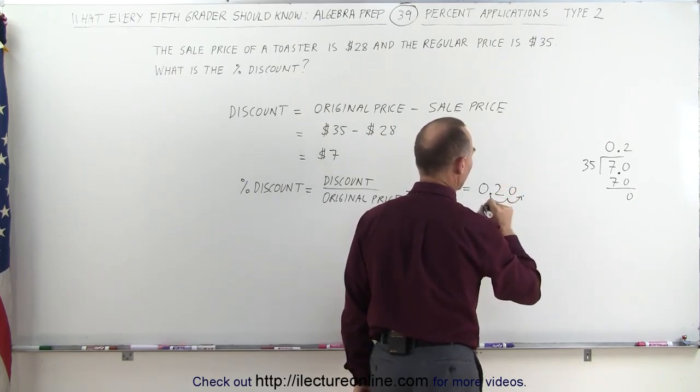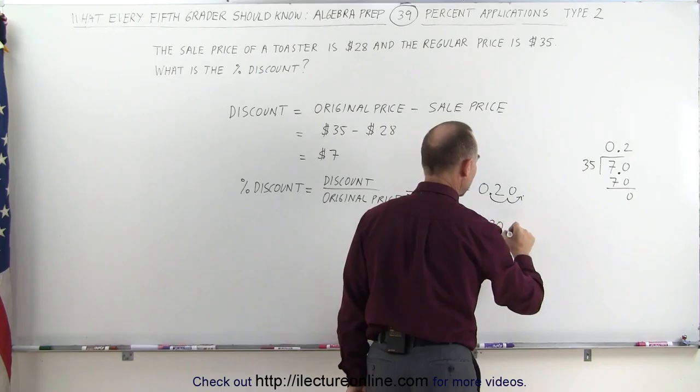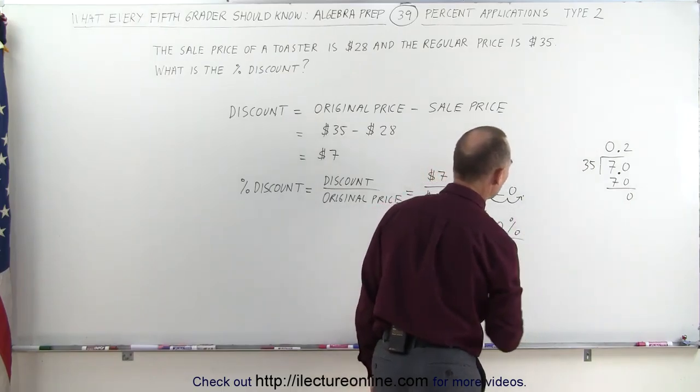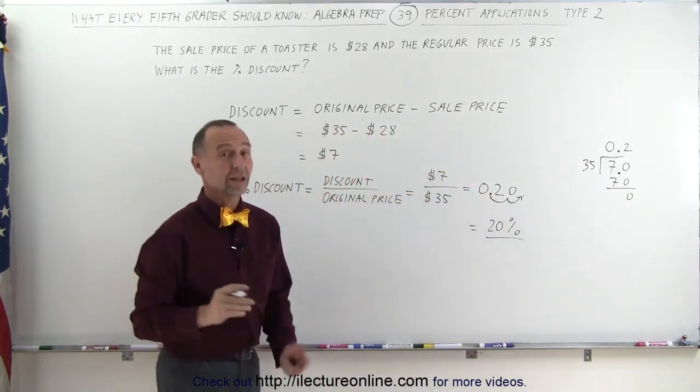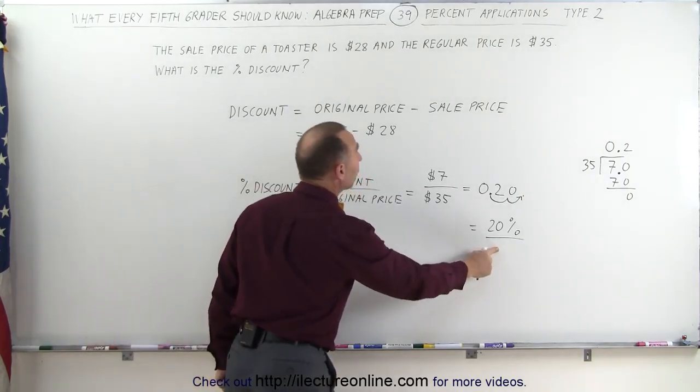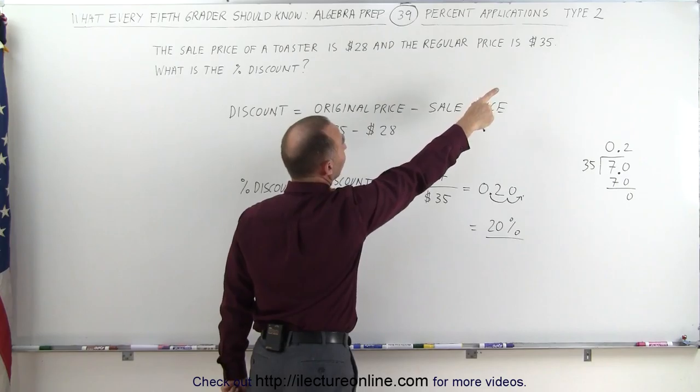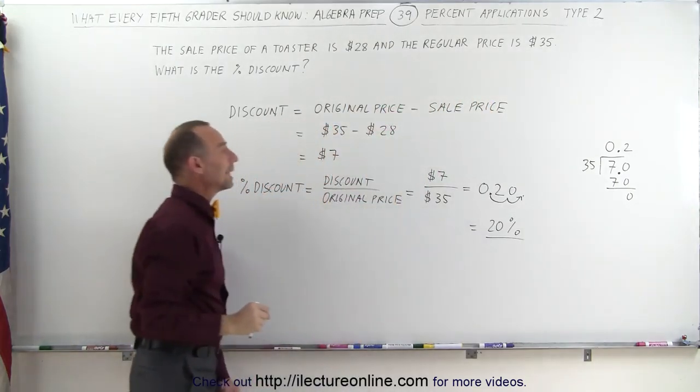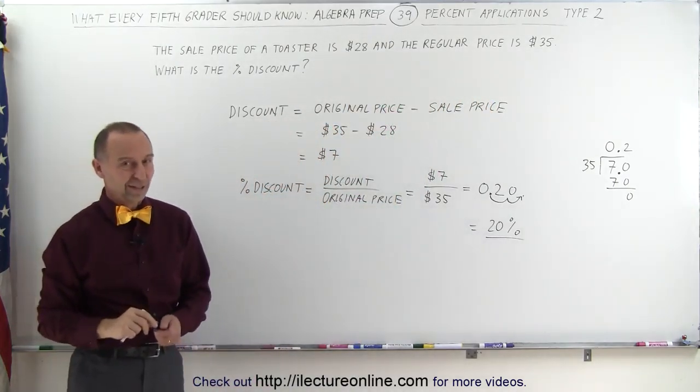This is equal to 20%. 0.2 is the same as 20%. Therefore, the percent discount was equal to 20% when the price went from the original price of $35 to the sale price of $28. And that's how that's done.